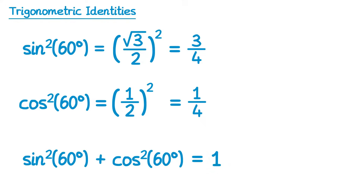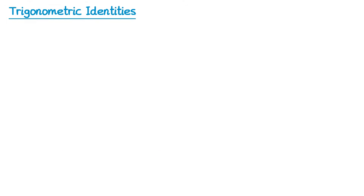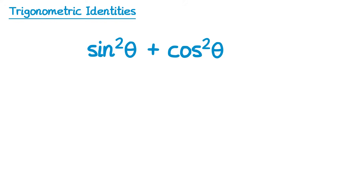It turns out this works for any angle, not just 60, so we arrive at our second identity. If you take an angle, square its sine, square its cosine, and add those together, you will always get 1. So sine squared theta plus cos squared theta is identically equal to 1.